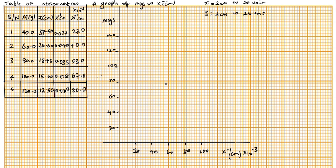Now it's time to start plotting our points. When m is 40, x inverse is 27. So this is your 40 on the m-axis. I'm going to trace 27 — each of these tiny lines on both axes represents 2 units. So I trace: 22, 24, 26. I'm going to place it at 26 because we can't get exactly 27 here.